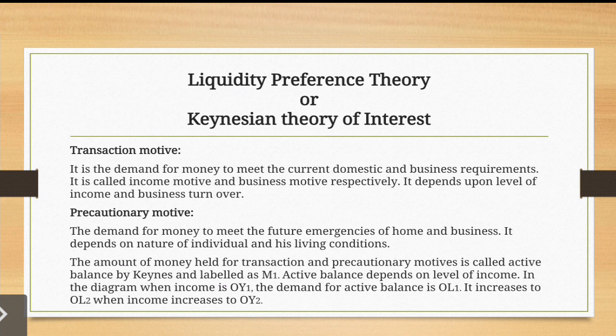Transaction demand for money depends upon your level of income and your business turnover. The higher your income level and the greater your business turnover, the more your domestic and business requirements will be. After this comes the precautionary motive.